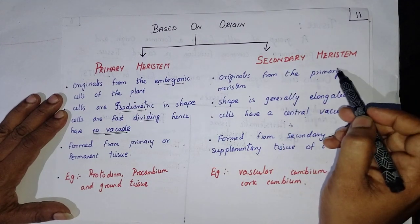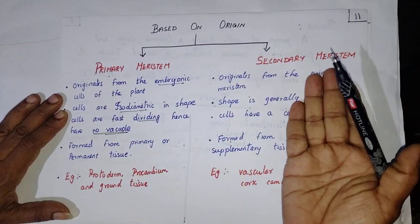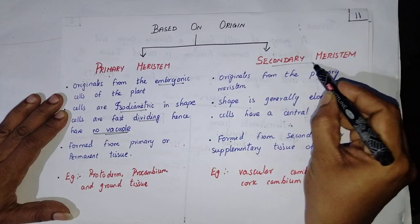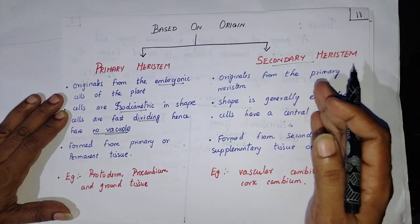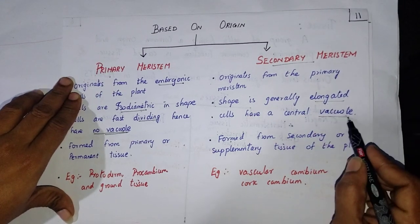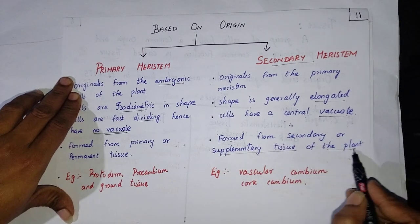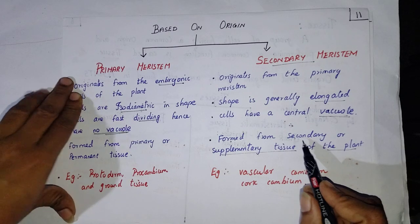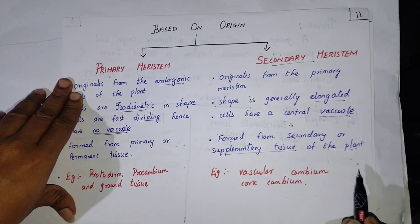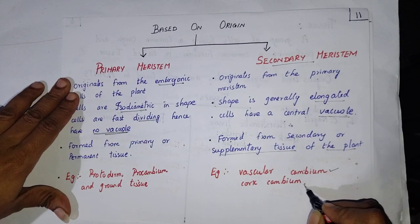Moving on to the secondary meristems — they originate from the primary meristems and are not formed from any other cells. The cells are generally elongated and they have a central vacuole. They form from the secondary or supplementary tissues of the plant. Examples are the vascular cambium and the cork cambium.